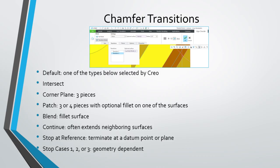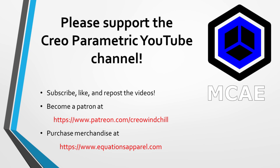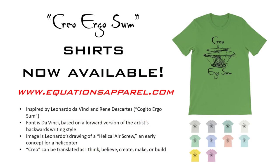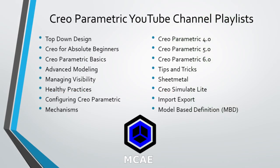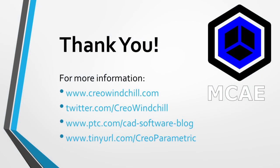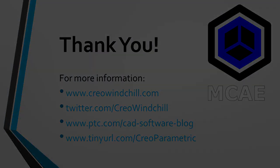With that, I hope you have a better understanding of the various different transitions available in Creo Parametric for chamfers. They include intersect, patch, corner plane, stop at reference, blend, continue, and the various different stop cases. I hope you enjoyed this video. For more information, please visit www.creowindchill.com. If you learned something from this video, please give it a thumbs up, and click the subscribe button to be informed when new videos are uploaded. Thank you very much.